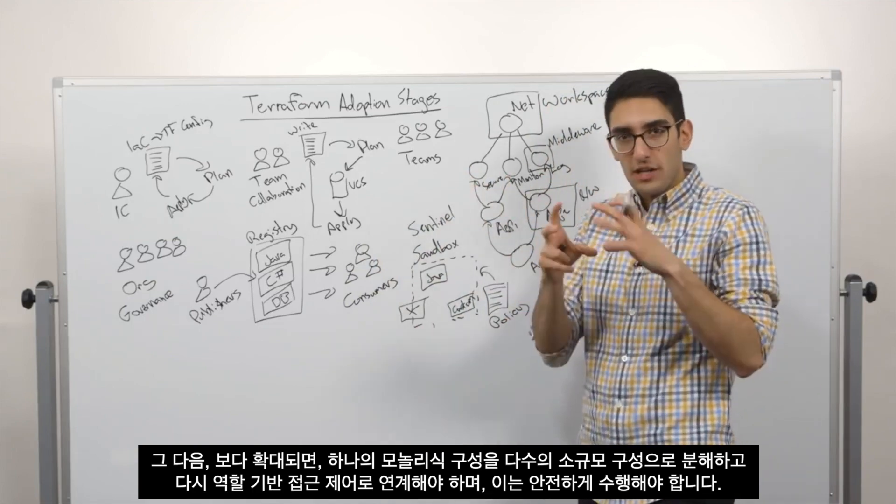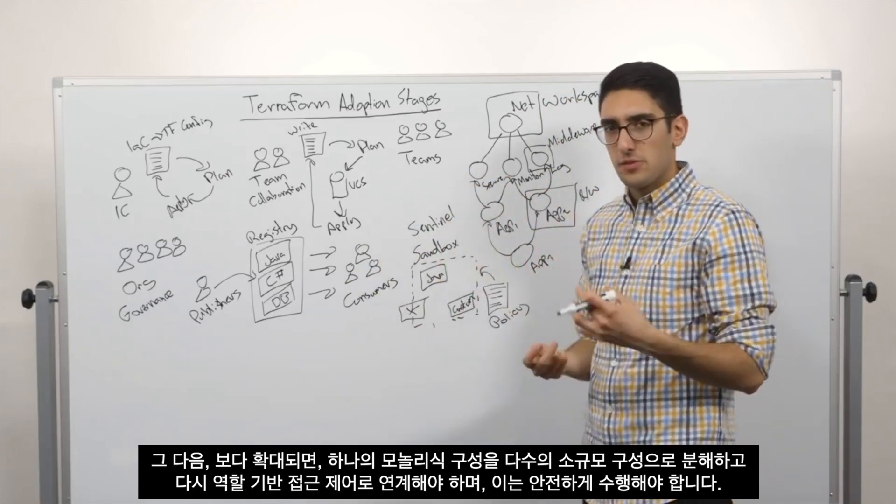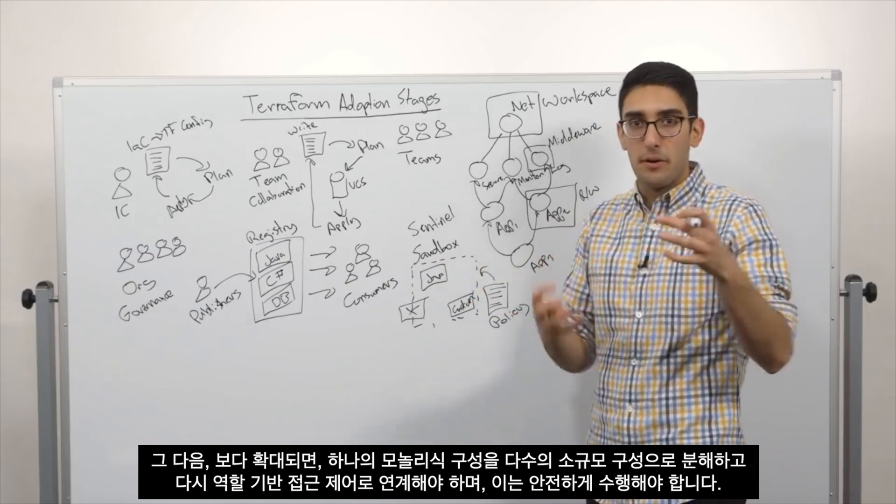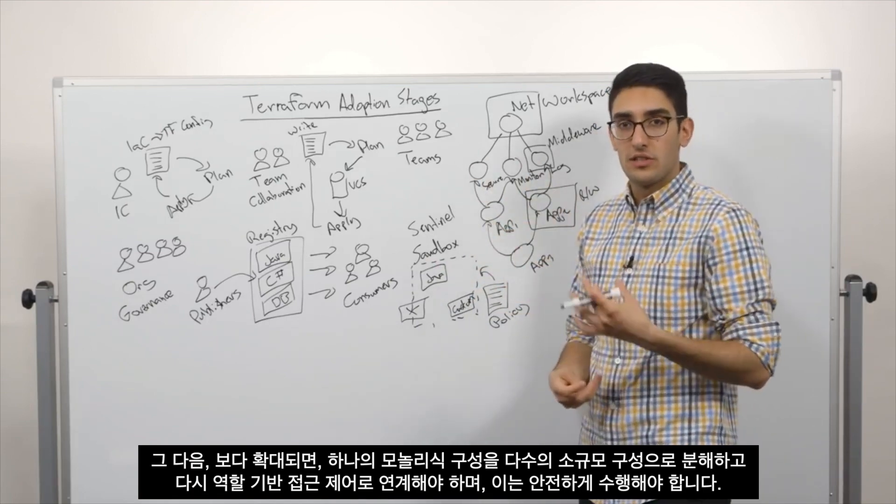Then as we go even bigger, it's really about decomposition from a single monolithic configuration into many smaller configurations that we compose together, and then tying that to role-based access control to do it safely.